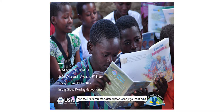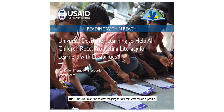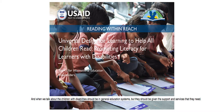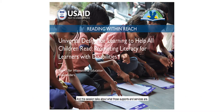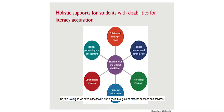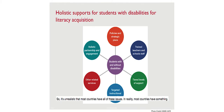Now I'm going to turn it over to Anne Hayes, who will talk more about holistic support. What we call holistic supports addresses the idea that children with disabilities should be included in general education systems, but given the supports and services they need. The toolkit includes a figure that shows the range of supports and services - policies and strategies, teacher training, tiered levels of support, instructional approaches, other related services, and who should be engaged.